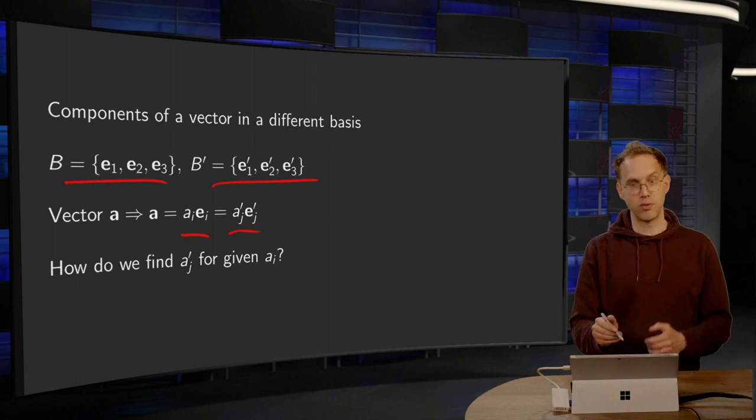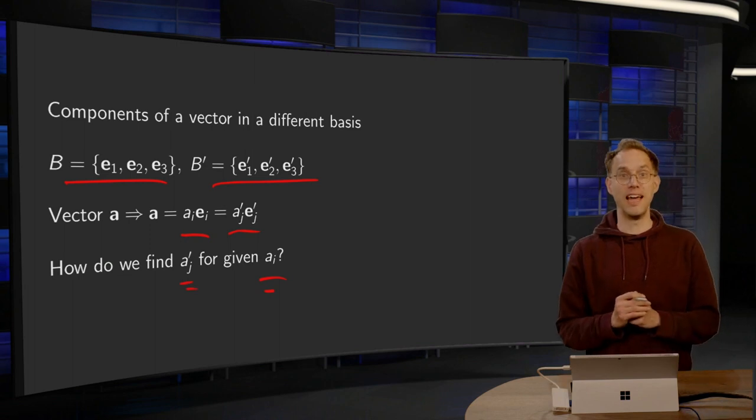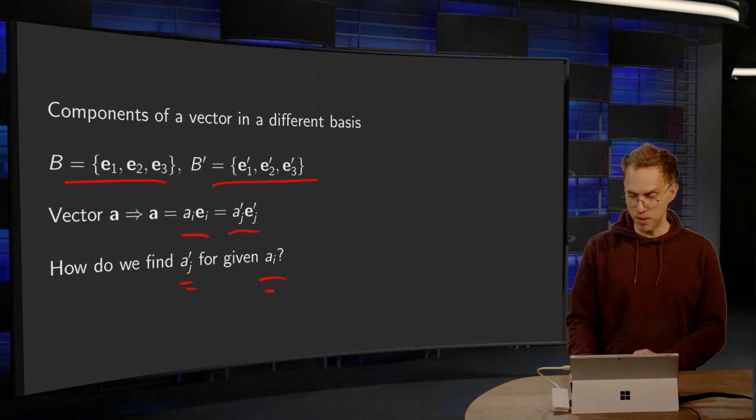And then the question is, of course, given those AI, so we know the AI, how do we find the new AJ', the new numbers, the new coordinates in the new basis?